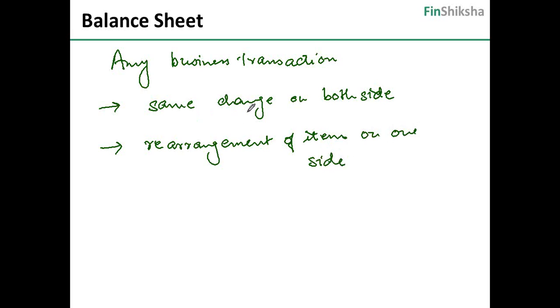In the first example, we saw Reliance borrowed 100 crore. This 100 crore is sitting in the bank. So there is a change on both sides. Now, at some point of time, Reliance uses this 100 crore to buy a piece of land. So cash goes down, fixed asset goes up, but this is nothing but a rearrangement of things on one side of the balance sheet, which is the asset side.